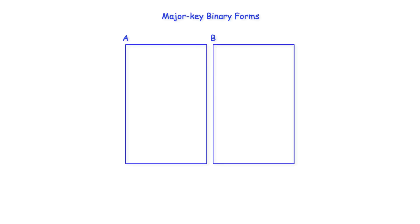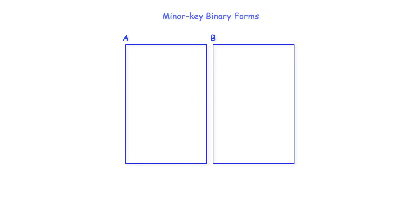In a major key binary work, typically the A section concludes either on the dominant chord or in the dominant key, and the B section modulates back to the tonic for the work's conclusion. The end of the A section in minor key works using binary form is either to the key of its relative major or its dominant minor.